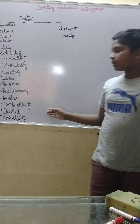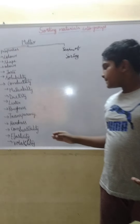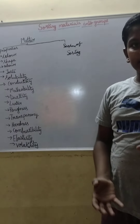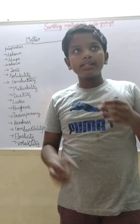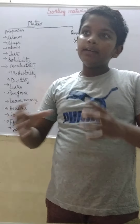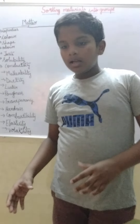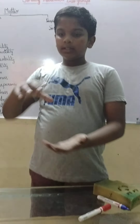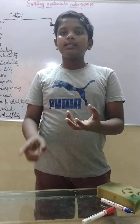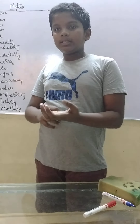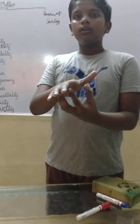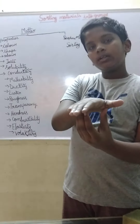Combustibility. Combustibility means — if you heat an object or keep a flame on it, does it burn or catch fire? Take iron — even if kept in flame for a long time, it doesn't catch fire; it melts instead. But if you take paper and keep it on a flame, it catches fire immediately.